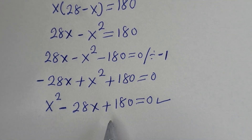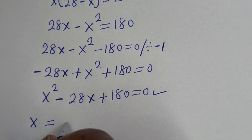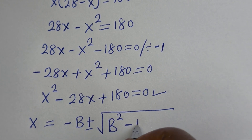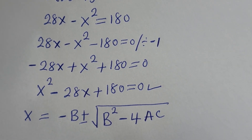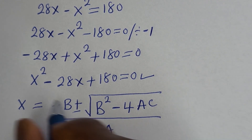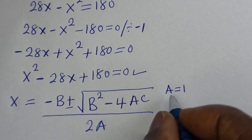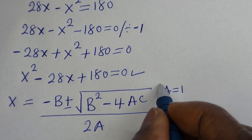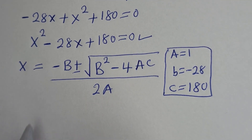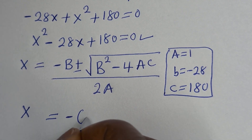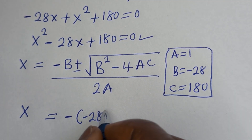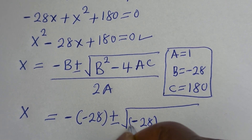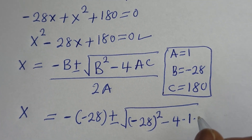This is a quadratic equation. Let's solve this using the quadratic general formula: S is equal to minus B plus or minus the square root of B squared minus 4AC, all over 2A. From this equation, A is equal to 1, B is equal to minus 28, C is equal to 180. Then S is equal to minus (minus 28) plus or minus the square root of (minus 28) squared minus 4 times 1 times 180.